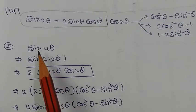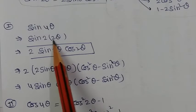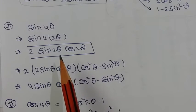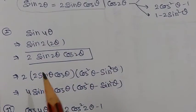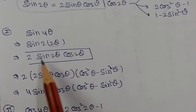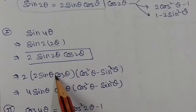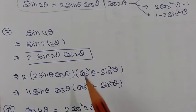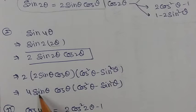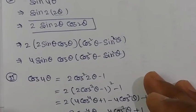For sin 4θ: sin 4θ equals sin(2·2θ) equals 2 sin 2θ cos 2θ. Expanding further: sin 2θ equals 2 sin θ cos θ, and cos 2θ equals cos²θ − sin²θ. So sin 4θ equals 4 sin θ cos θ (cos²θ − sin²θ).